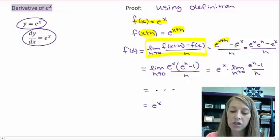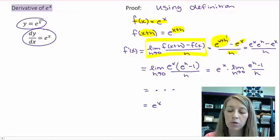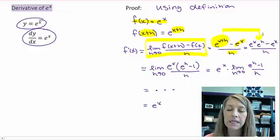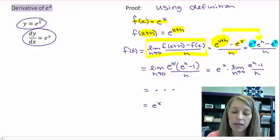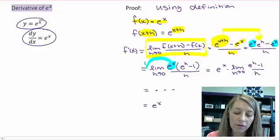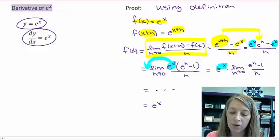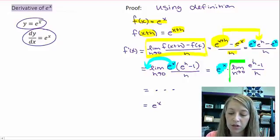Here's the x plus h and our original function, all divided by h. Using our exponent rules, we can take e to the x plus h and separate it as e to the x times e to the h. Since both terms in the numerator have e to the x, we can factor that out. Since e to the x does not have an h in it, we can pull it outside of the limit.